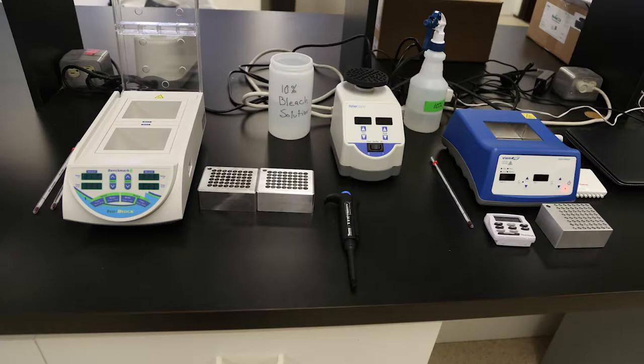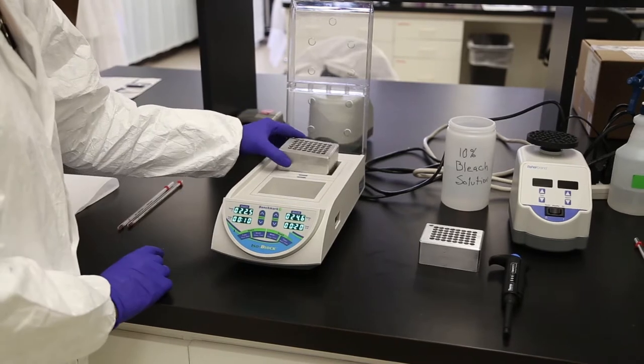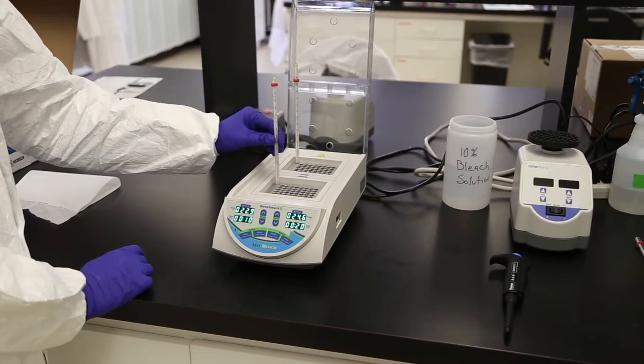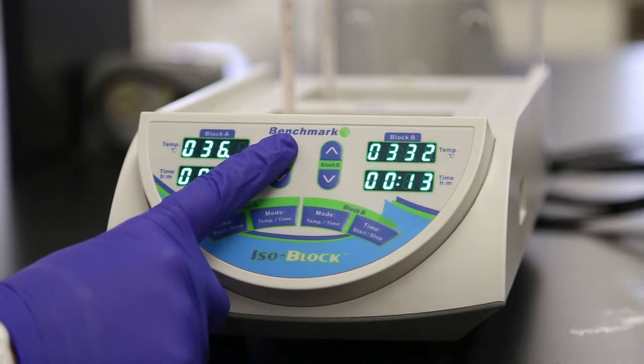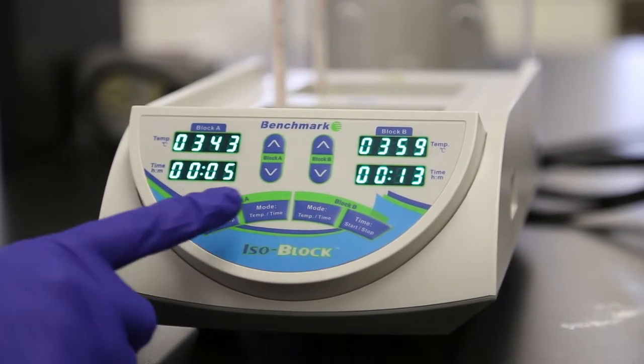Dry heat bath preparation. While the reagents are adjusting to room temperature, you can set up your dry heat bath units. This video demonstrates the setup of a Benchmark dual dry heat bath. Turn on the dual block's main power source. Fully open the lid and place a 48-hole aluminum block into each of the slots, then place a thermometer into the offset hole in the corner of each block. Press mode temp time for block A once to select the temperature setting. Using the block A arrow keys, press and hold up or down to adjust the temperature setting to 37 degrees Celsius. The block immediately starts heating.